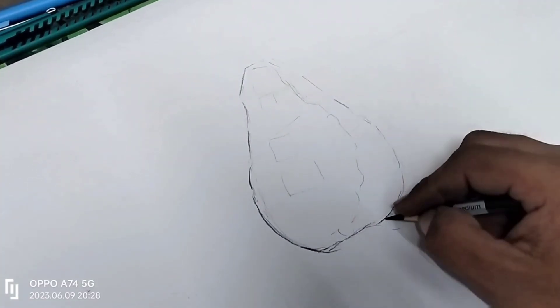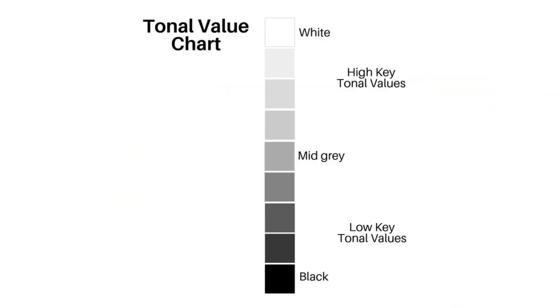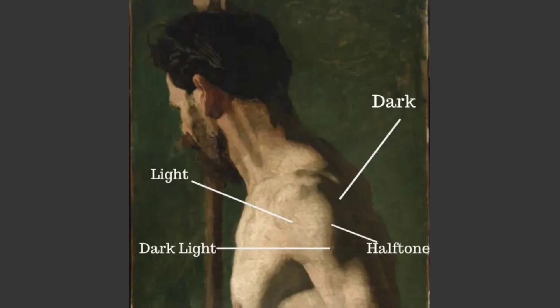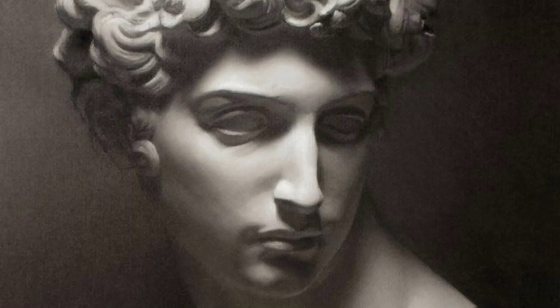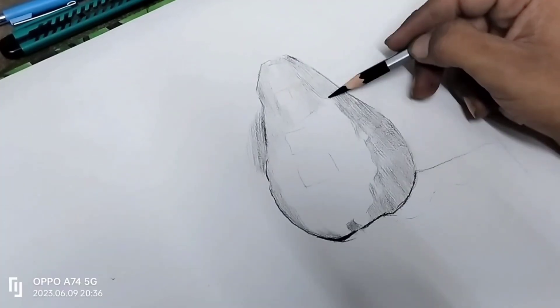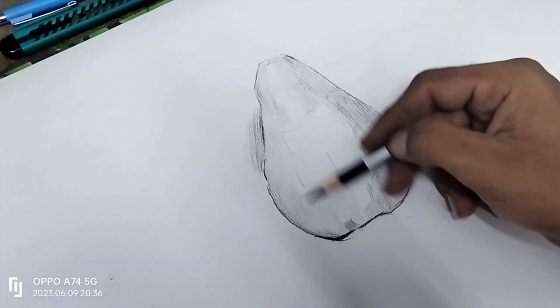Why use charcoal? Tonal values are very fundamental. If you learn a drawing or medium, then the 3D depth — if you look at a portrait, you can see the light and shadow. Charcoal is a very good and versatile medium.